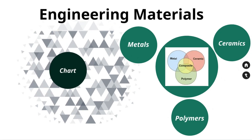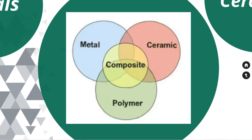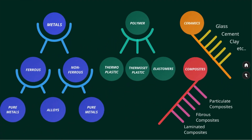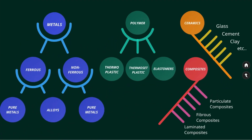Engineering materials refers to the group of materials that are used in the construction of man-made structures and components. The primary function of an engineering material is to withstand applied loading without breaking and without exhibiting excessive deflection. The major classification of engineering materials includes metals, polymers, ceramics, and composites.